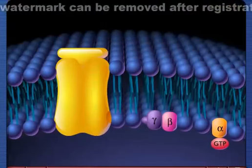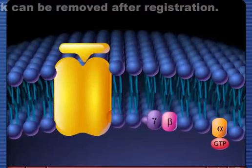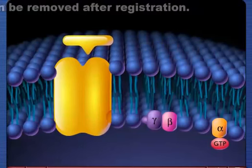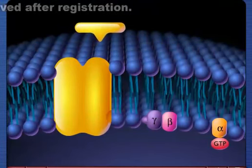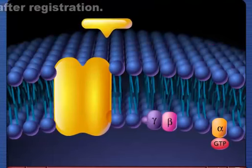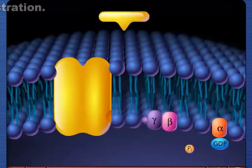When the ligand separates from the receptor site, additional G proteins are no longer activated. Inactivation of the alpha subunit occurs when its own phosphorylase activity removes a phosphate from the guanosine triphosphate, leaving guanosine diphosphate bound to the subunit.